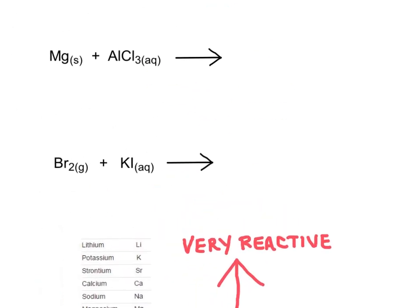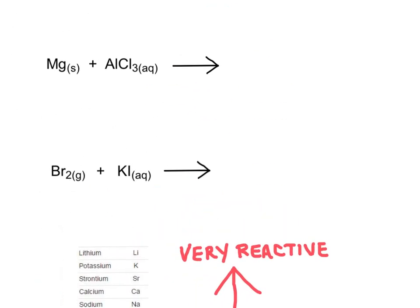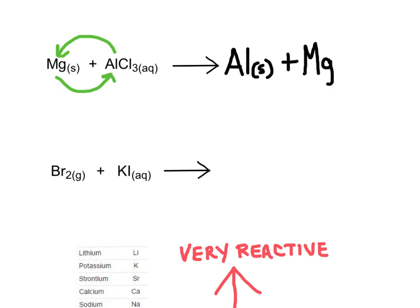Looking at the activity series, magnesium is just slightly above aluminum on the list, meaning magnesium is slightly more reactive. So this reaction will take place — magnesium can bump out aluminum. They swap places, and I'll write aluminum now all by itself with a little 's' to show it's solid. The tougher part is figuring out how magnesium combines with the chloride.